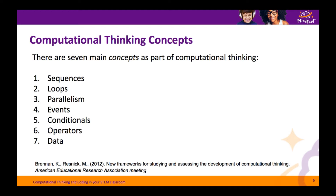According to Brennan and Resnick, there are seven main computational thinking concepts. The first is sequences — a series of steps or instructions that are executed in order, one after another. We can also see loops, which are used for running the same step or group of steps over and over until a condition is met. Parallelism is when multiple things are executing at the same time simultaneously. Events is when one thing happens that causes something else to happen. We might also see conditional statements or decision statements: if something happens, then something will happen.